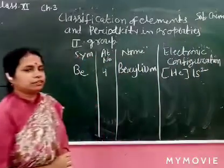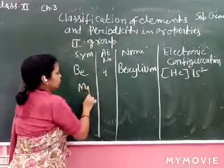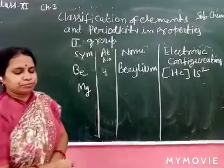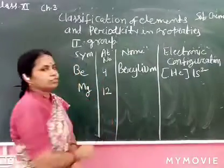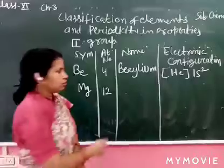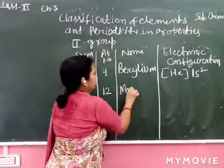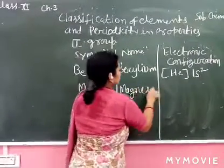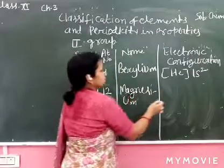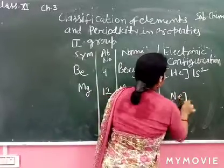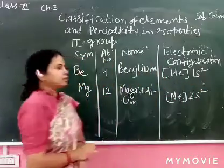Next is Magnesium. Its atomic number is 12. Name is Magnesium. And its electronic configuration is [Ne] 3s². Clear?